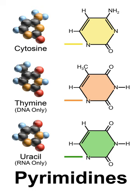Pyrimidine is an aromatic heterocyclic organic compound similar to pyridine. One of the three diazines, it has the nitrogen atoms at positions 1 and 3 in the ring. The other diazines are pyrazine and pyridazine. In nucleic acids, three types of nucleobases are pyrimidine derivatives: cytosine, thymine, and uracil.